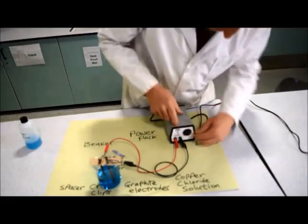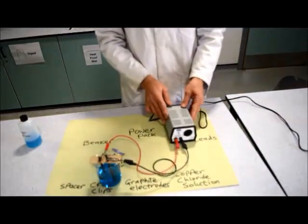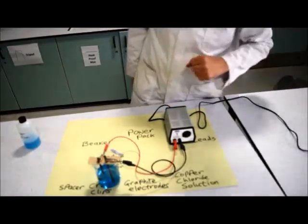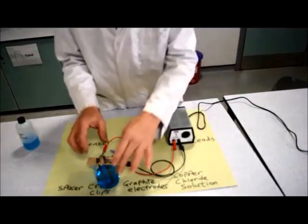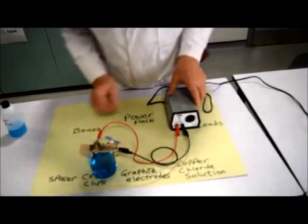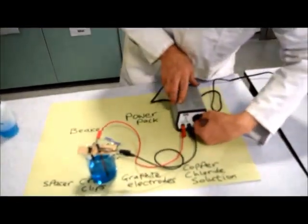We turn it to the lowest voltage on the power pack, then we switch it on and look at our electrodes. We're going to be looking for bubbles. If there's no bubbles, we turn the power up.